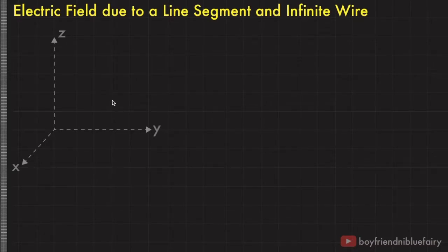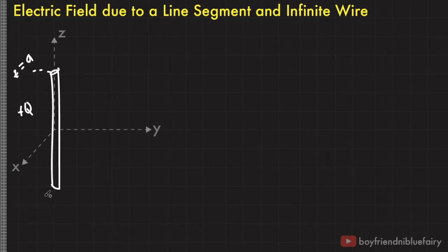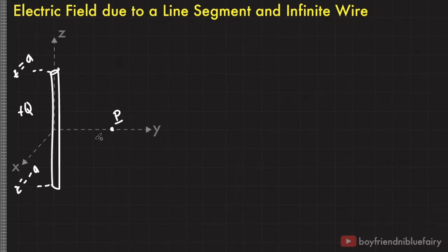Consider this imaginary coordinate axis x, y, and z. Along the z-axis lies a line of charge. It has a total charge of positive Q from z equals a to z equals negative a. Let's calculate the electric field at point P on the y-axis. This point P is situated at distance y from the origin.